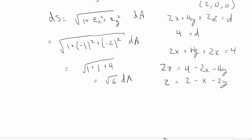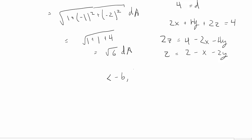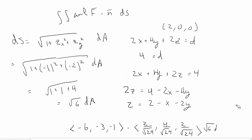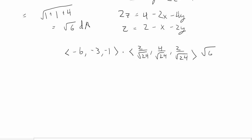Now we're ready to plug everything into the surface integral formula: (−6, −3, −1) dotted with (2/√24, 4/√24, 2/√24), times √6 dA over the plane. Distributing √6 over √24 simplifies to 1/2, so the unit normal effectively becomes (1, 2, 1) with a factor of 1/2 already applied.